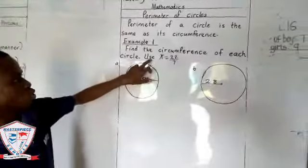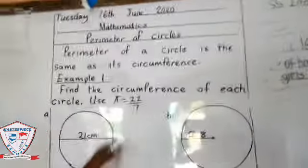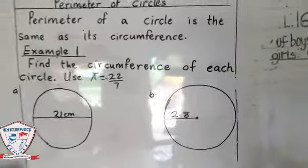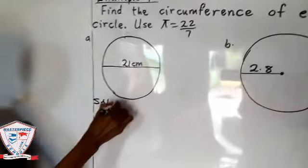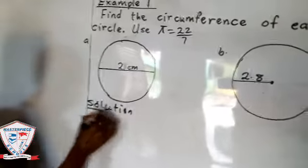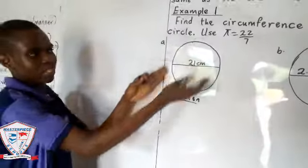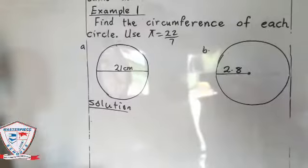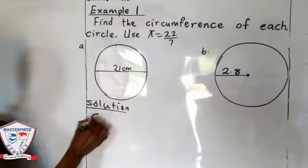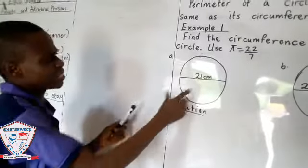The question says to use π = 22/7. Now let's start with the first question. Solution: This is a circle. As you can see, the circle - we should find its circumference.